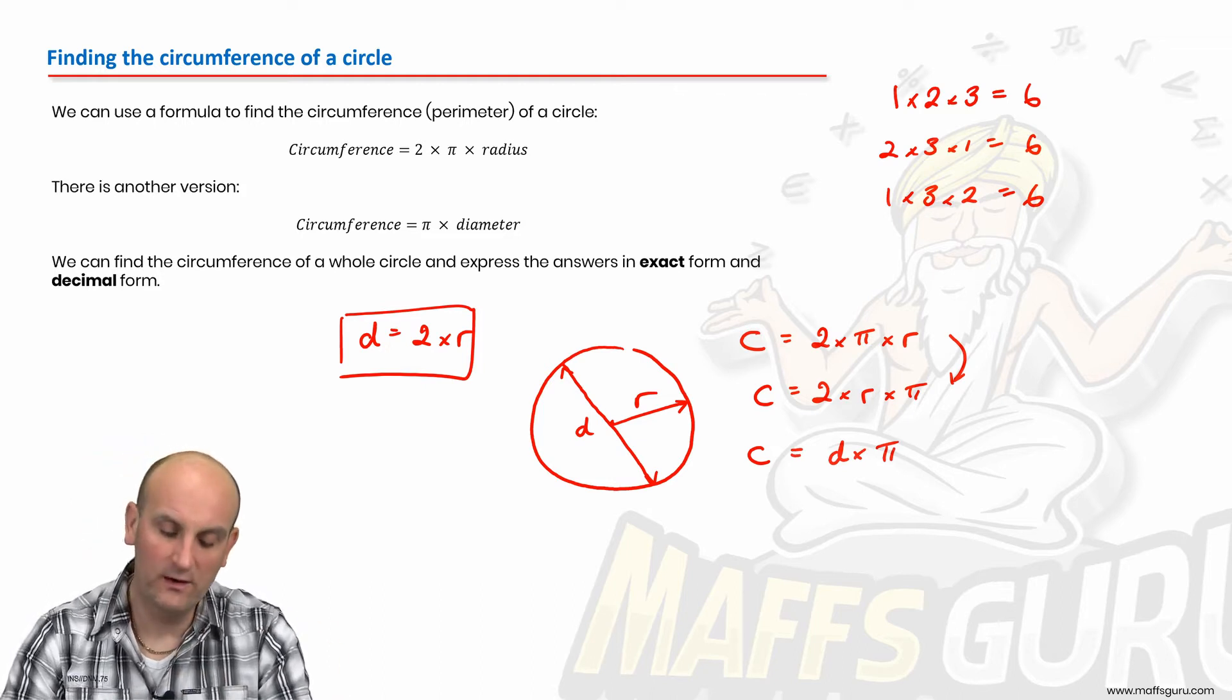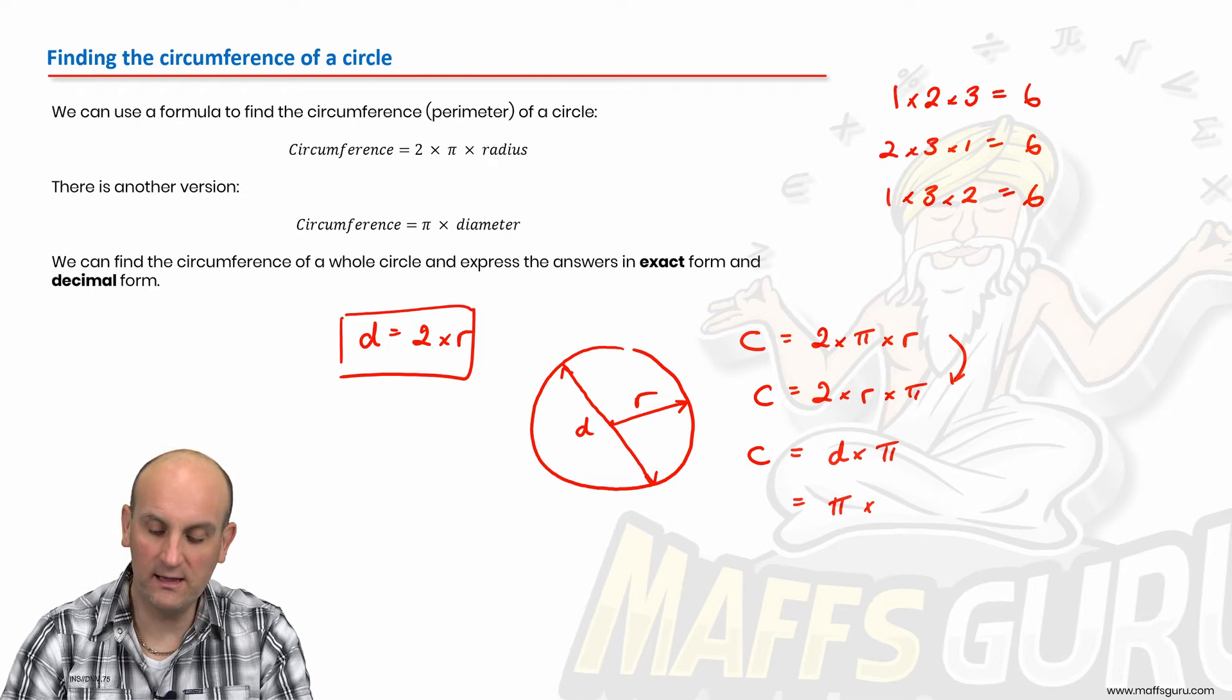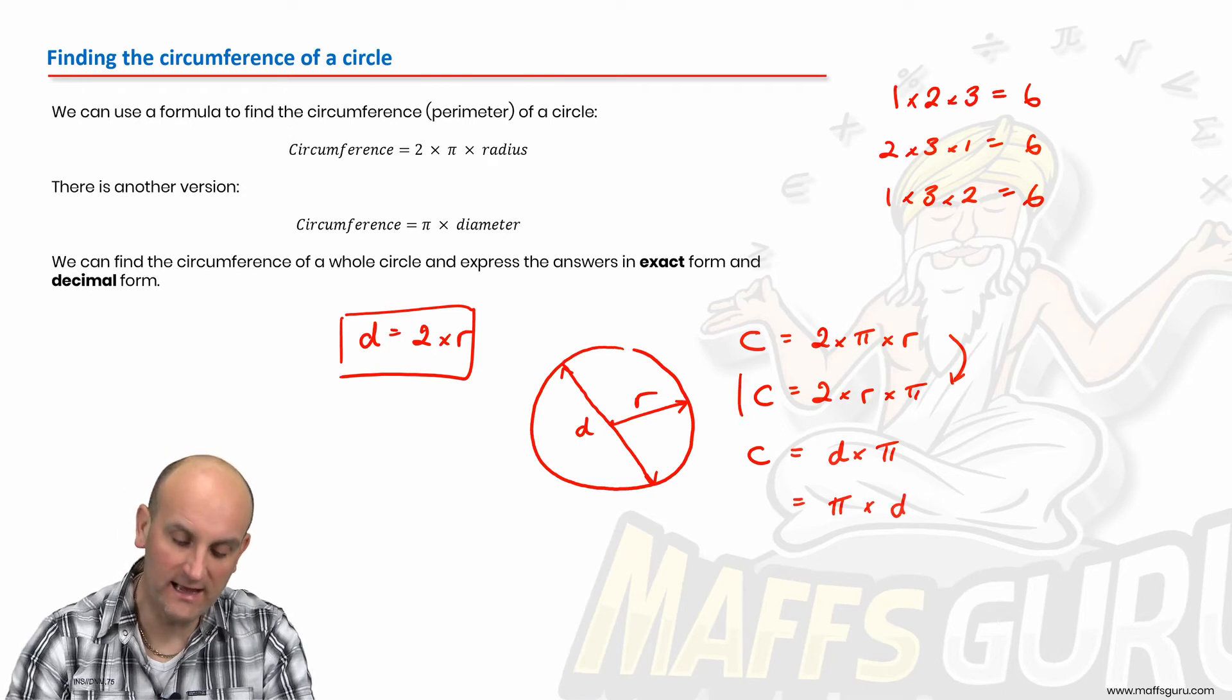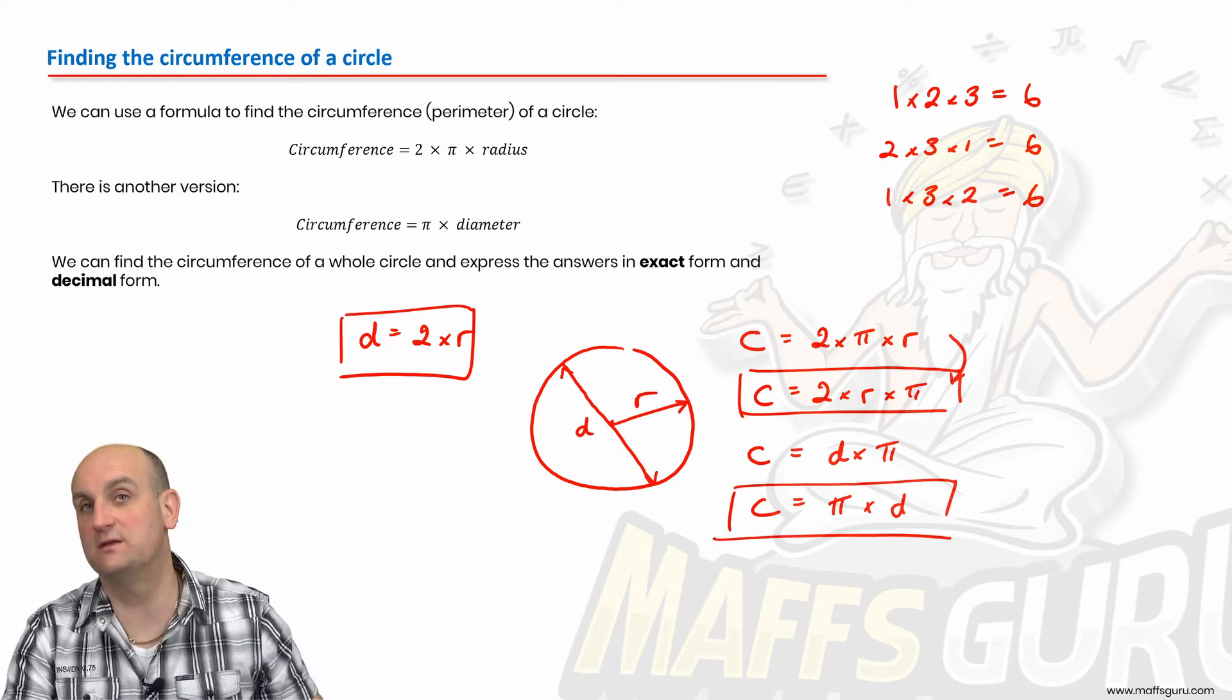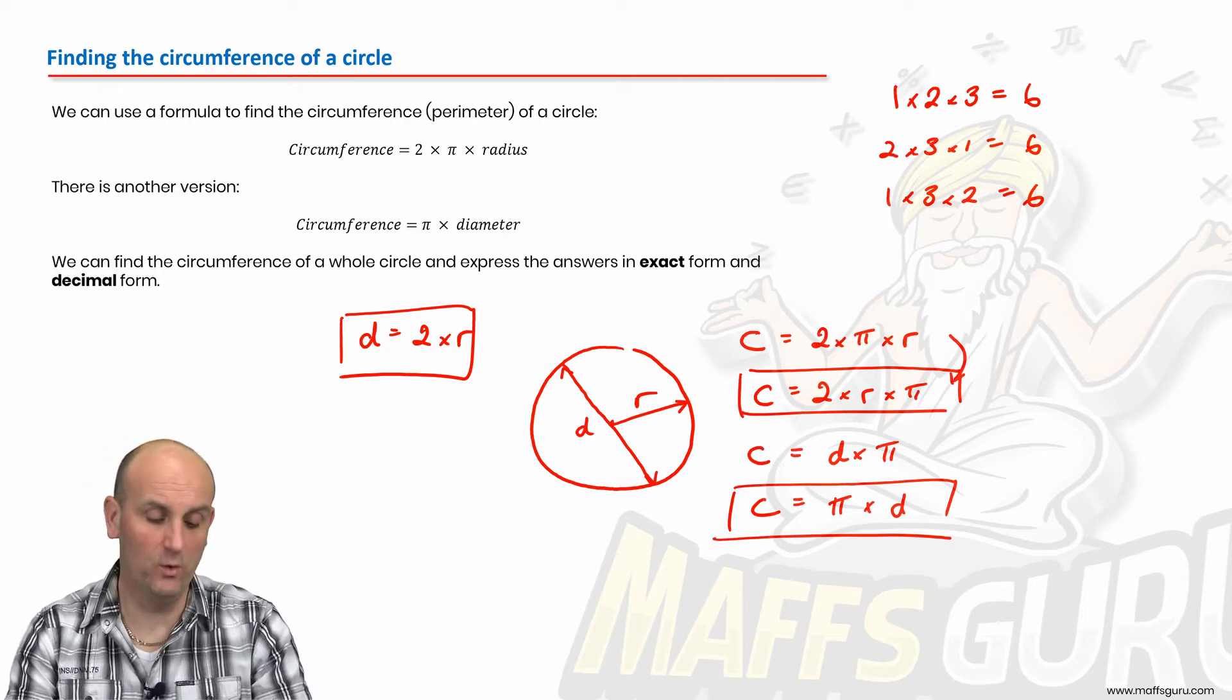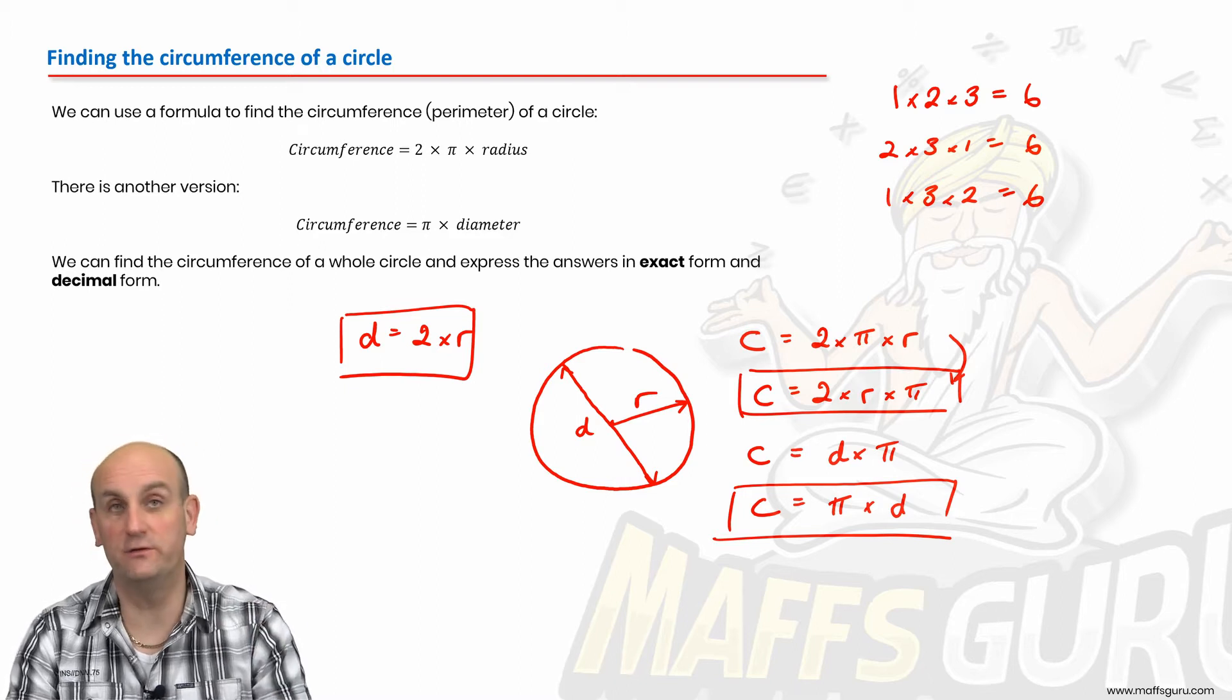And so my circumference is diameter times pi. And weirdly, for maths, we normally write that as pi times diameter. So there are actually two formulas that are useful to us. They give us the same answer that either circumference is pi times diameter, or circumference is two times pi times radius.